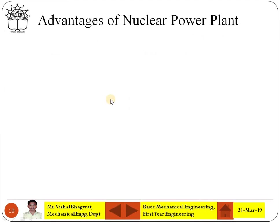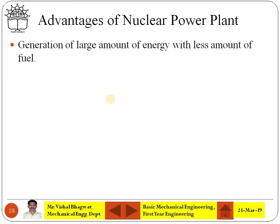Now the advantages and disadvantages of nuclear power. The first main advantage is that with a small amount of fuel you get a large amount of heat. With just 1 kg of uranium, the heat generated in a nuclear power plant is equivalent to burning 4500 tons of high-grade coal. That is the beauty of the nuclear power plant — large amounts of heat with very little fuel.